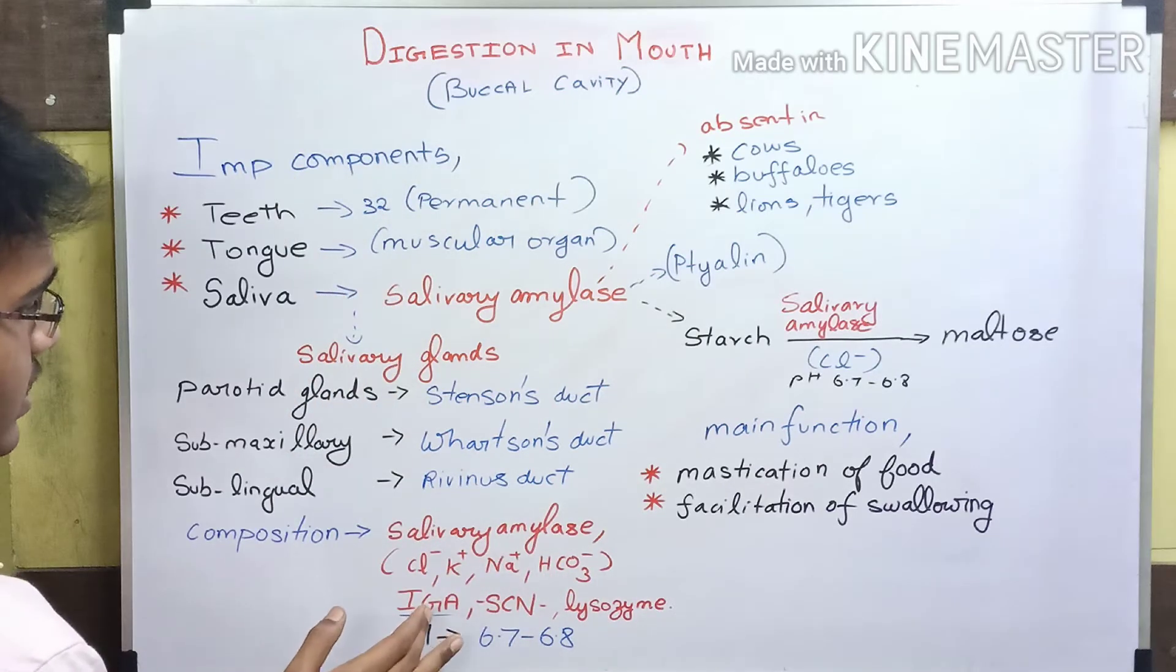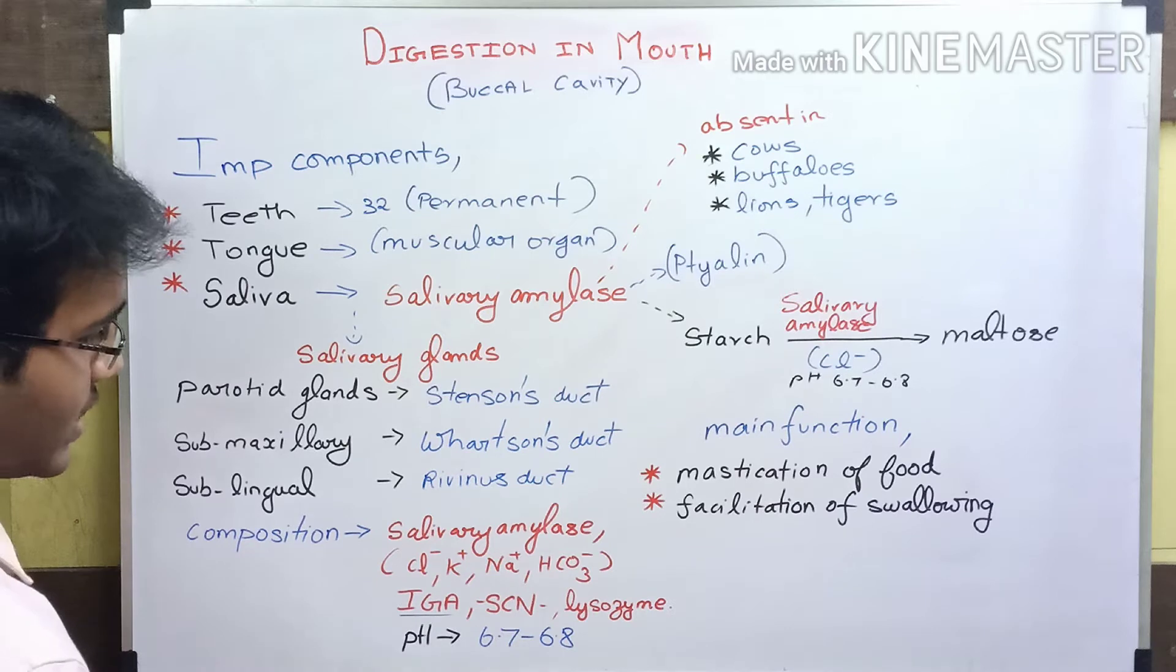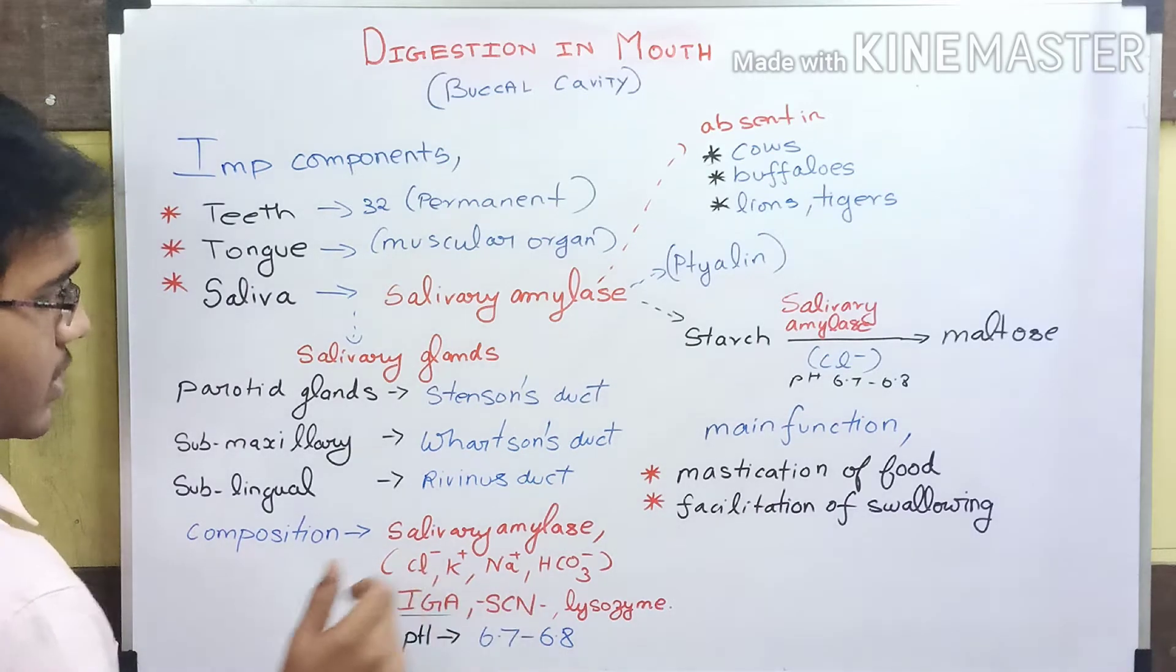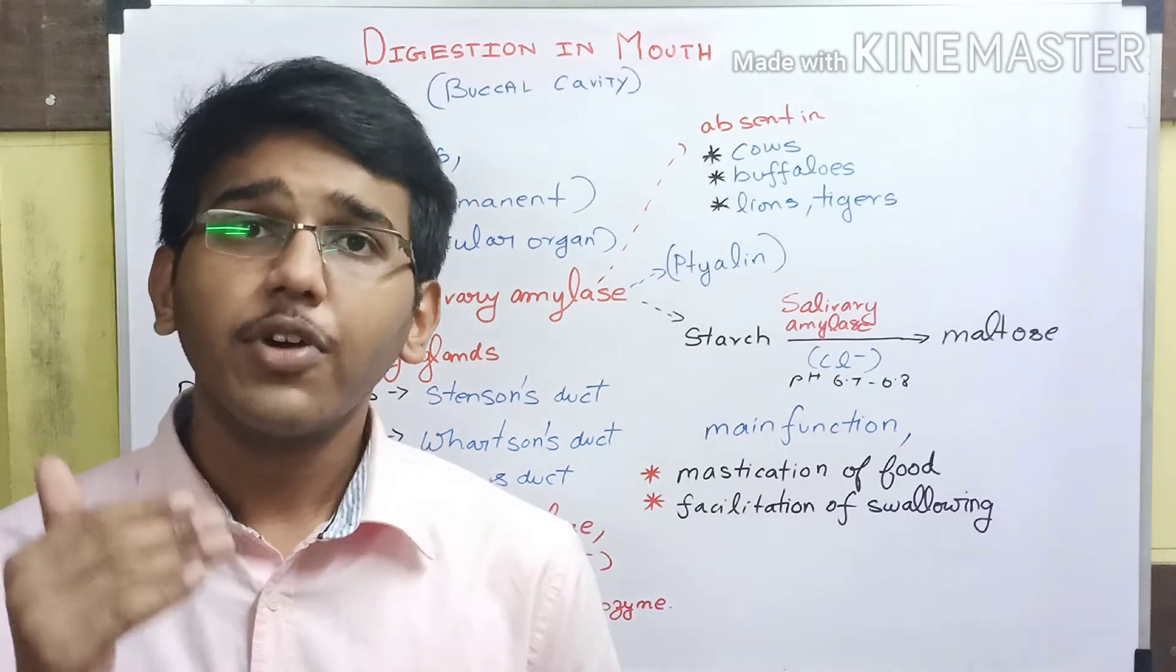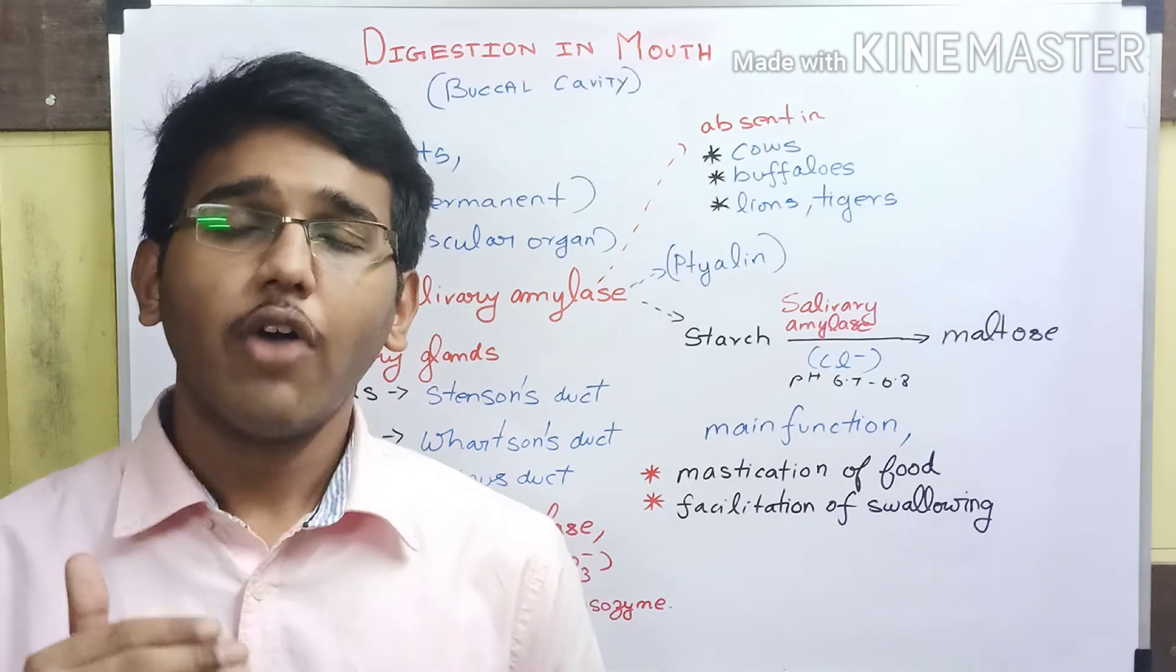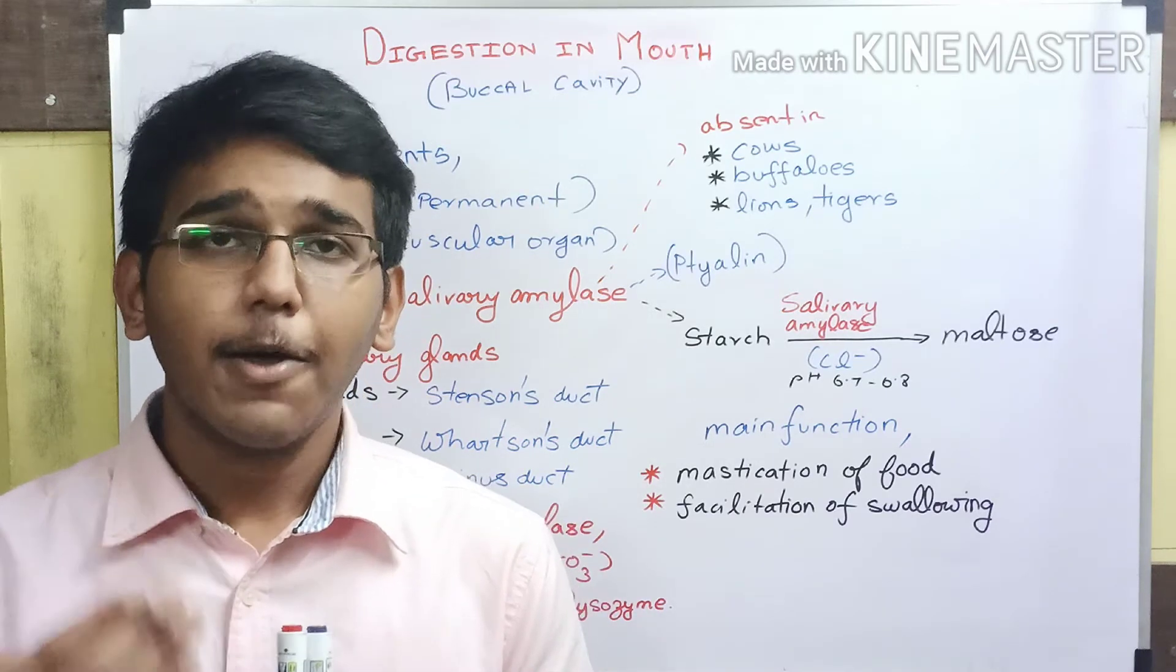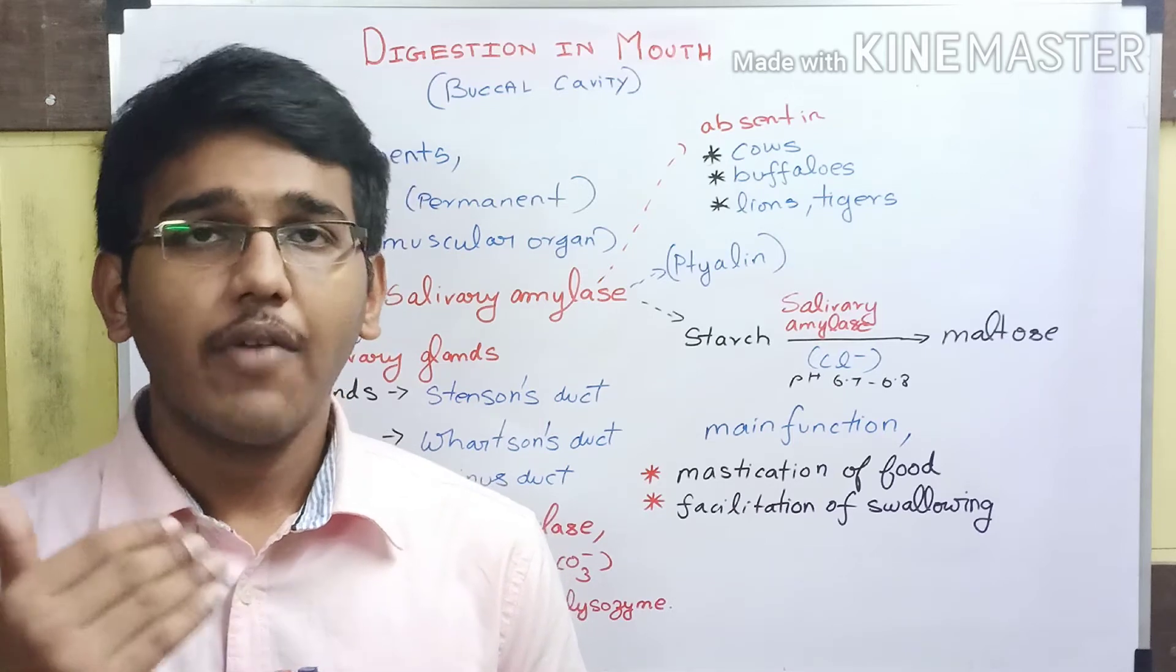These three components—the antibody IgA, the compound thiocyanate, and lysozyme—play an important role in the first line of defense of the immune system against pathogens entering our mouth.